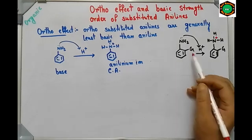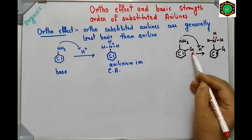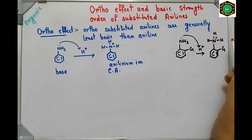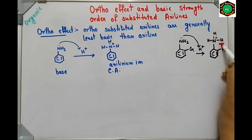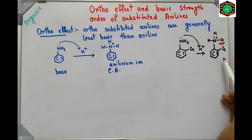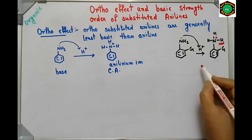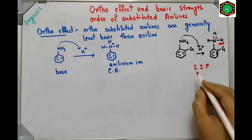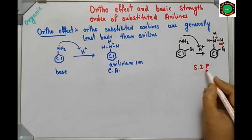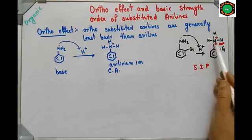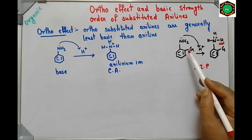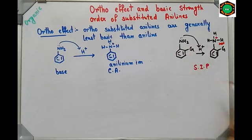Now, if at the ortho position any group is present, then after protonation there is steric crowding between the hydrogens and this group. So chances of protonation will be decreased. This is called steric inhibition of protonation. Therefore, the probability of protonation is decreased and ortho substituted amines are less basic — this is called the ortho effect.